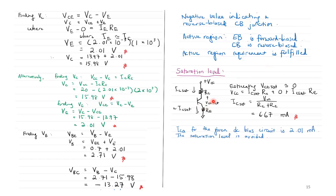Checking the saturation level: we estimate VCE_sat ≈ 0, giving IC_sat = VCC / (RC + RE) = 20 / (2 kΩ + 1 kΩ) = 6.67 mA. Our calculated ICQ was 2.01 mA, which is well below 6.67 mA, so we can safely say the saturation level is avoided and the BJT operates in the active region.